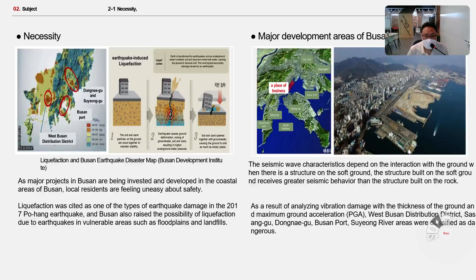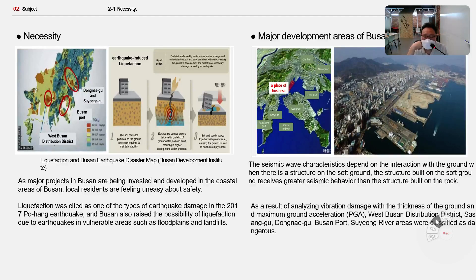As a result of our analysis, vibration damage related to the thickness of the ground and maximum ground acceleration was assessed. West Busan distribution district, Sasanggu, Dongnaegun, and Busan port were classified as dangerous zones.